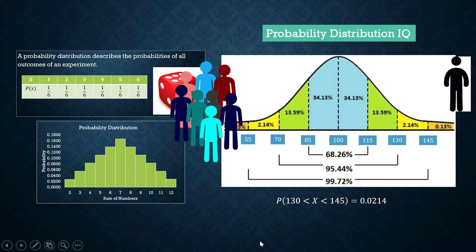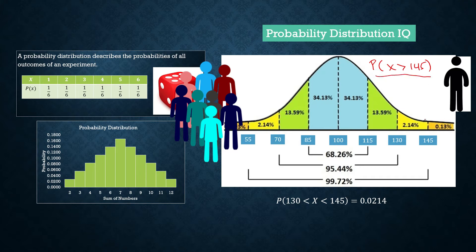What is the probability that a randomly selected person would have an IQ greater than 145? Looking at the normal curve, the region whose area gives this probability is the region to the right of 145, which extends to positive infinity.